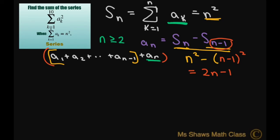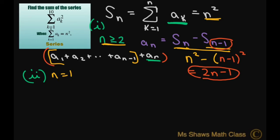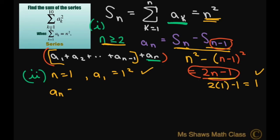Now let's check the first term to make sure it works. This is case 1. If n equals 1, then a sub 1 equals 1 squared equals 1. Let's see if it works with our formula: 2 times 1 minus 1 equals 1. Yes, it works. So by case 1 and case 2, we have that a sub n equals 2n minus 1, for n greater than or equal to 1.